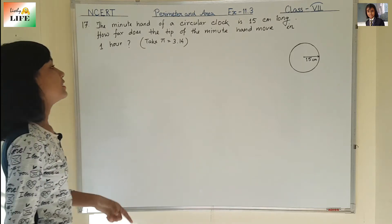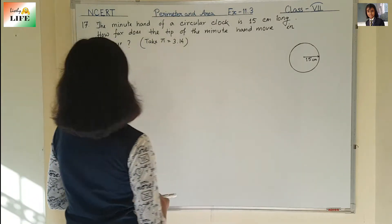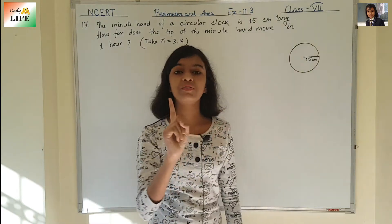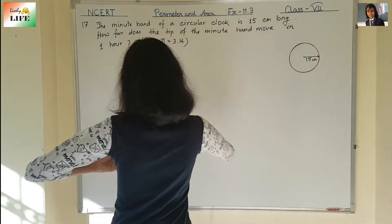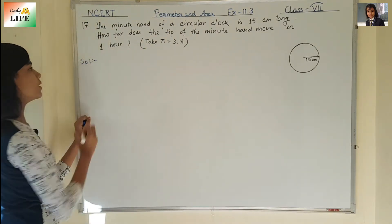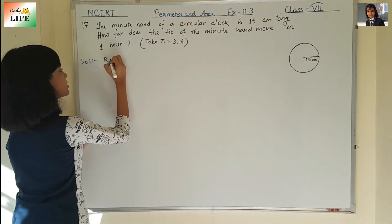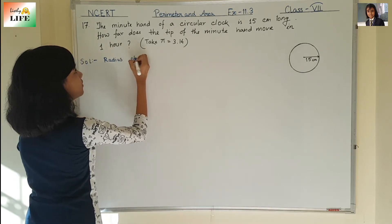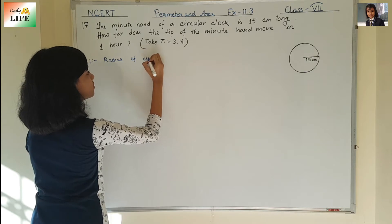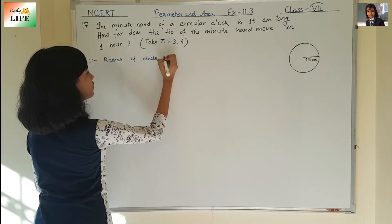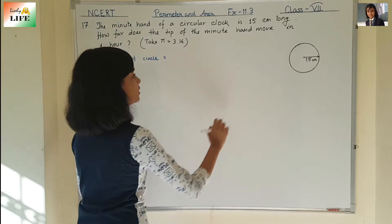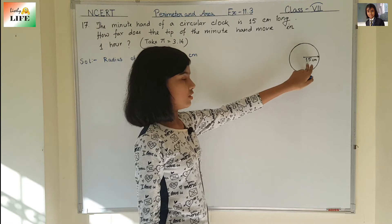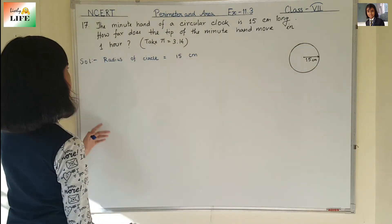How far does the tip of the minute hand move in one hour? The radius of the circle is 15 centimeters because the length of the minute hand is 15 centimeters. So 15 centimeters is the radius of the circle.